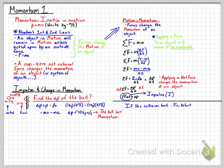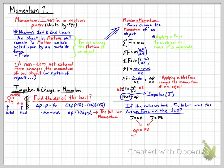Now let's say when the ball hit the wall, the collision took 0.5 seconds. We want to know the average force of the ball hitting the wall. We know impulse equals change in momentum, and impulse equals force times time, so we combine them: change in momentum equals force times time. Our change in momentum was negative 10 kg·m/s and the time was 0.5 seconds. Dividing both sides by 0.5, we get force equals negative 20 kilogram meters per second squared.